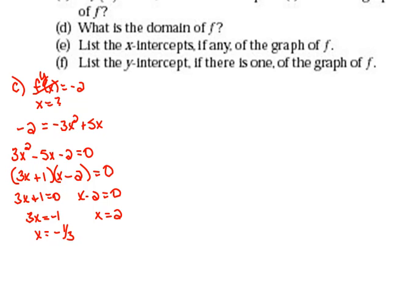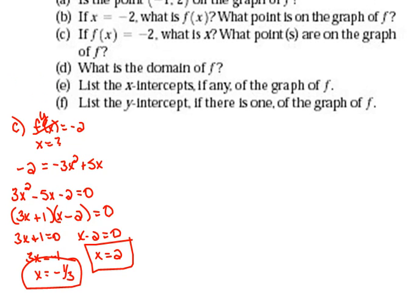So our question said, what is x? Well, x is negative 1 third, and x is 2. Now also, if you'll remember, it said, back up to our question,